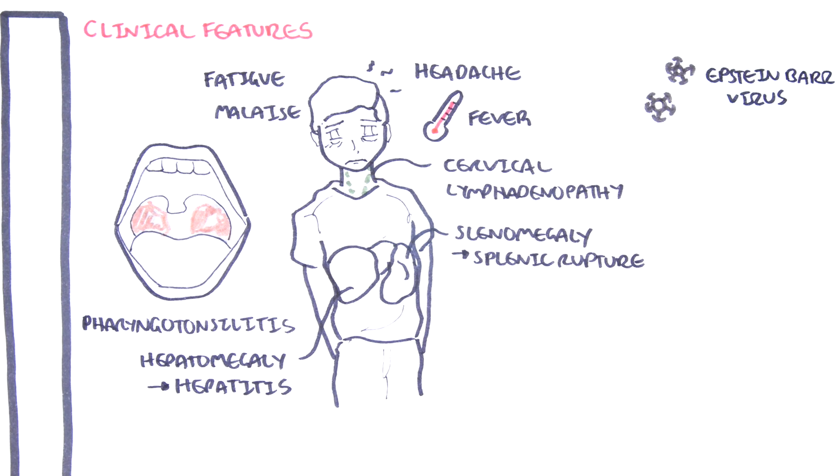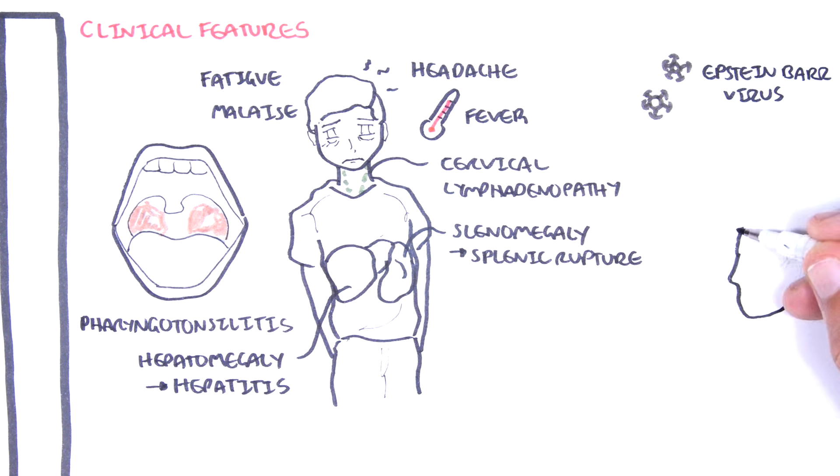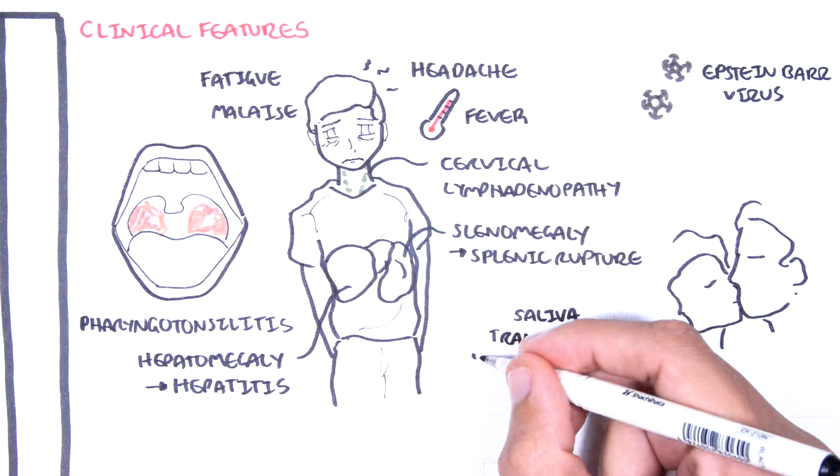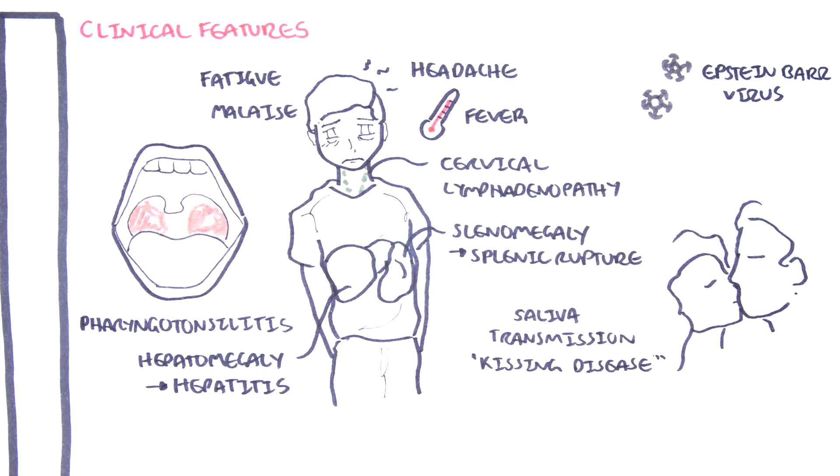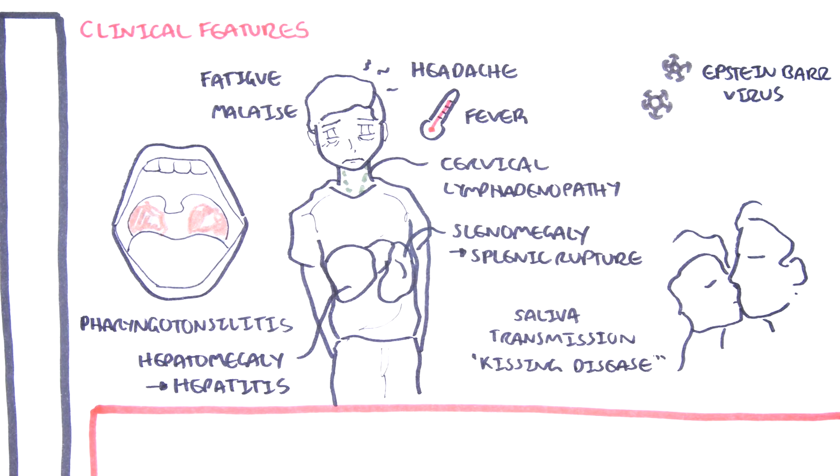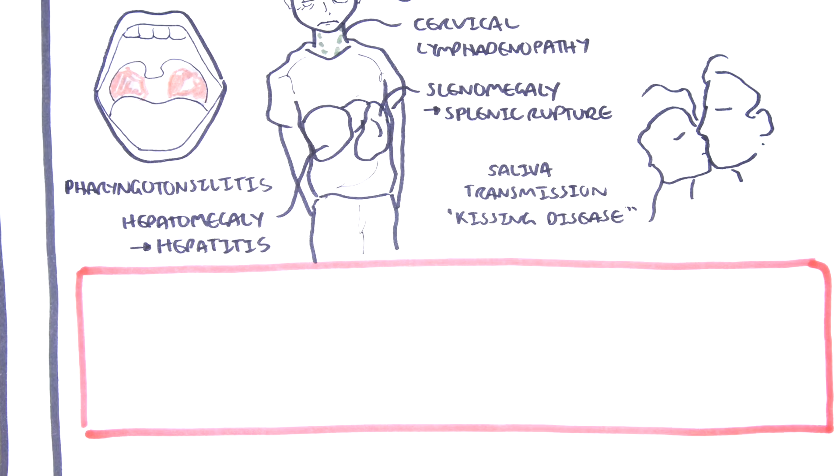Epstein-Barr virus is a virus that is part of the herpes family and is transmitted via saliva. That is why EBV infection is also known as the kissing disease. Once in the body, the Epstein-Barr virus targets B cells in the oropharynx, such as in the tonsils. And so in the tonsils, they replicate and conquer as the body builds up an immune response.